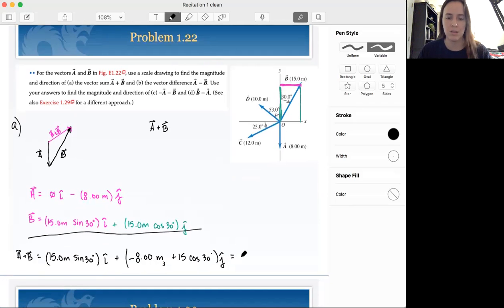All right, so now if I punch this into my handy dandy calculator, 15 times the sine of 30 is 7.5. Cool. So sine 30 is a half. I knew it was one of those special ones, but I can't remember which one. Okay, so 7.5 i hat and then we have negative 8 plus 15 cosine 30 is going to be plus 4.99. So we're going to round that to 5 j hat.